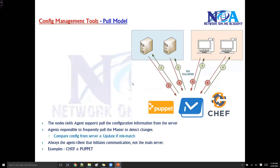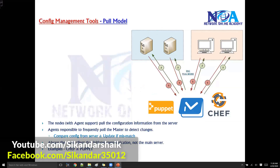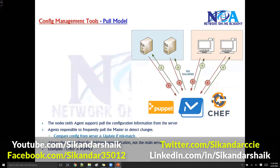It depends on which tool uses which model. Chef and Puppet use the pull model, whereas SaltStack and Ansible go with the push model option.